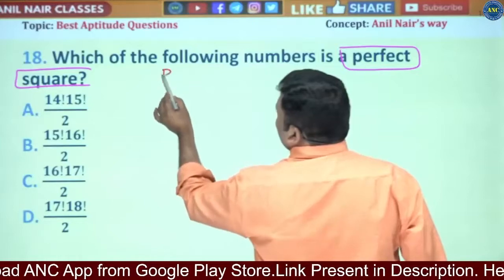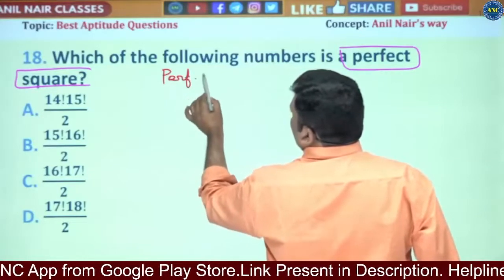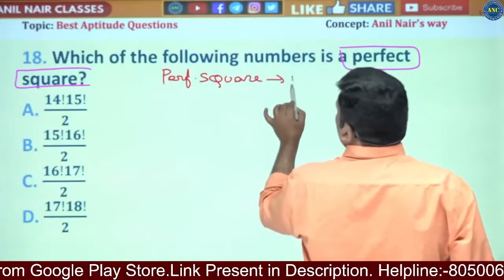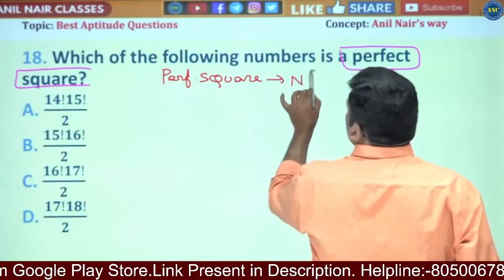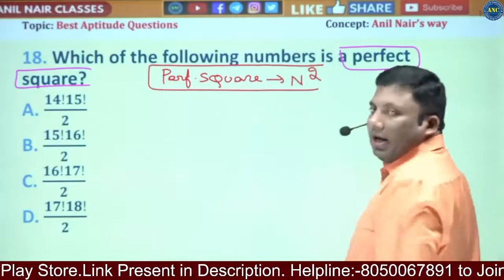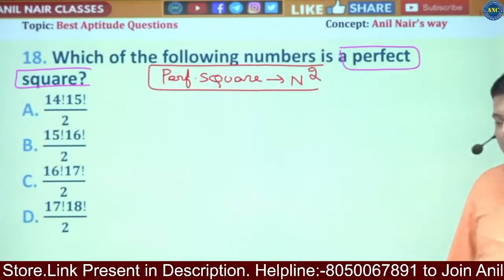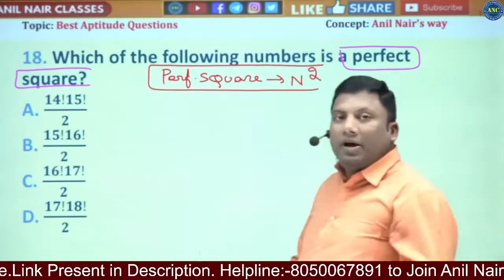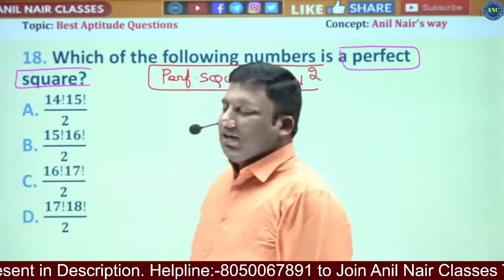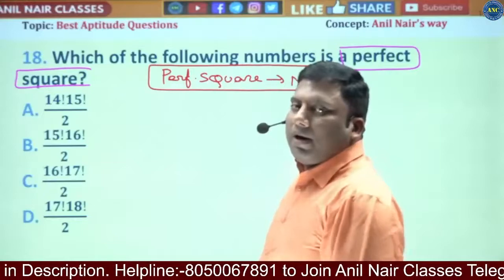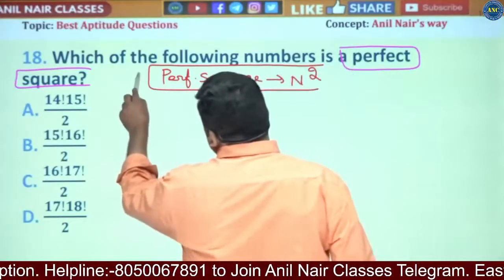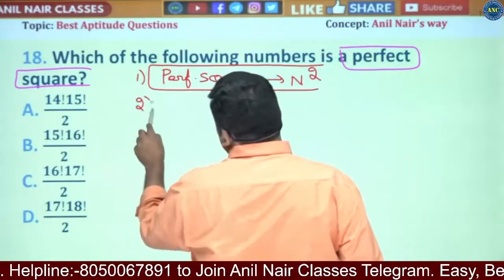Any perfect square will be of the form n squared, where n is a natural number. A perfect square is a number multiplied by itself — that is called a perfect square. First we understood the keyword.